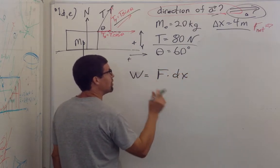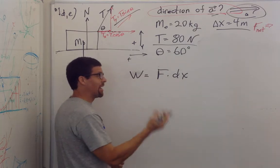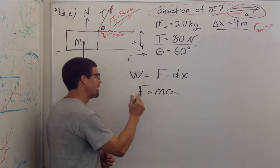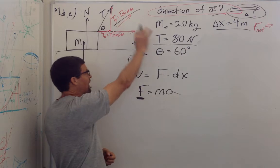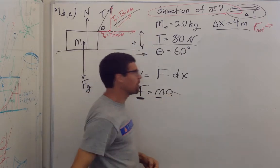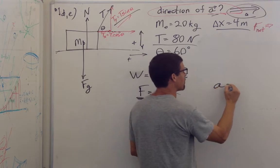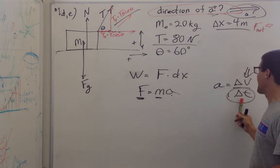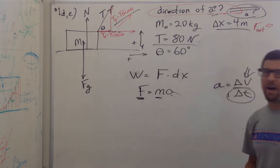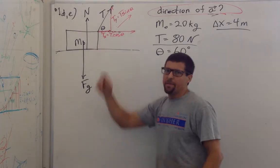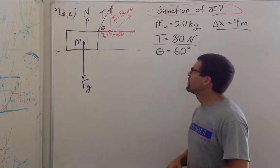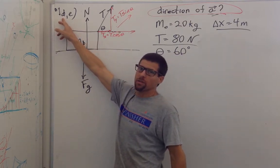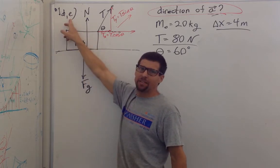Now I'm giving you the amount of time. So if I give you time and I'm asking for velocity, you're going to use force equals mass times acceleration. Because we can find the forces, we know the mass, we can find the acceleration. If we know the acceleration, we can use acceleration as change in velocity over change in time. D and E are dynamics problems because I'm giving you forces and asking for another force — for D, what is the normal force, and for E, I'm asking for acceleration.